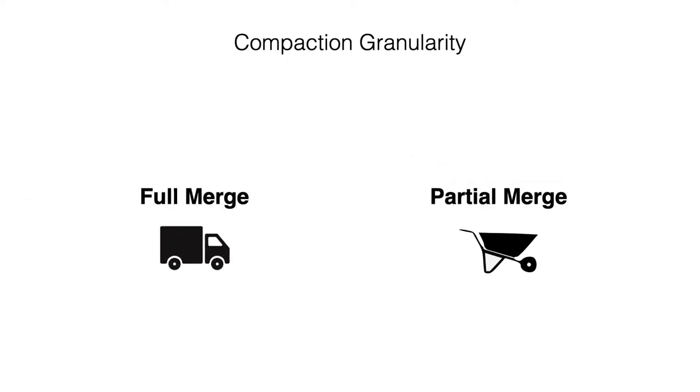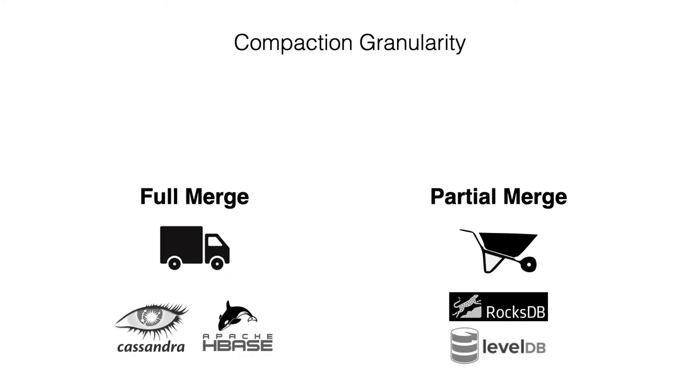Today, all LSM Tree designs in the wild can be classified into one of two categories with respect to how they granulate compaction: full merge versus partial merge. For instance, full merge is used by default in HBase and Cassandra, while partial merge is used by default in RocksDB and LevelDB.